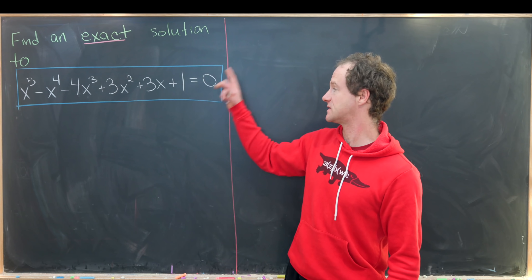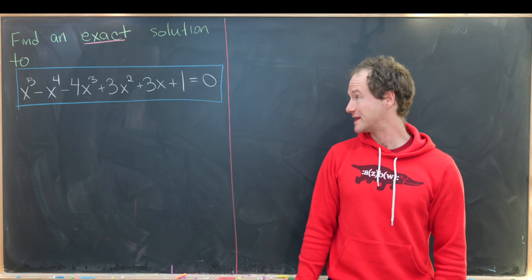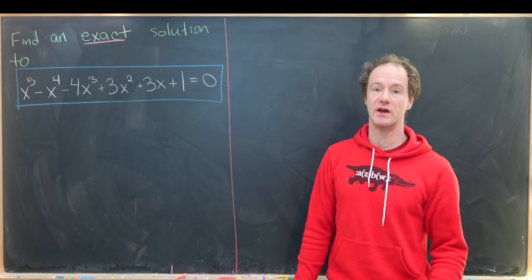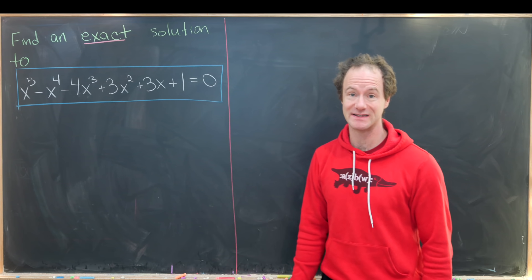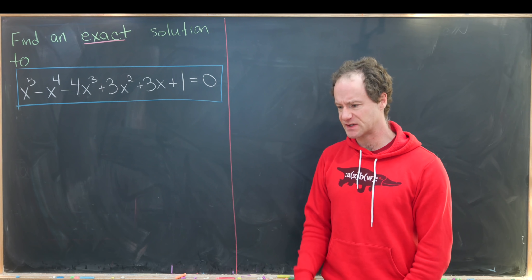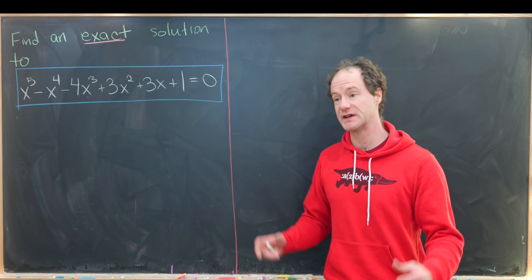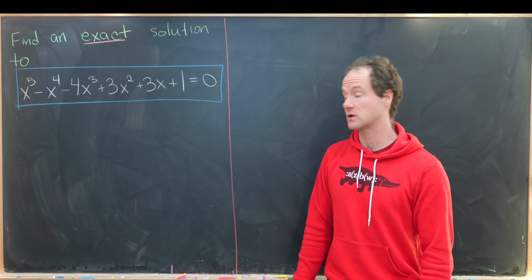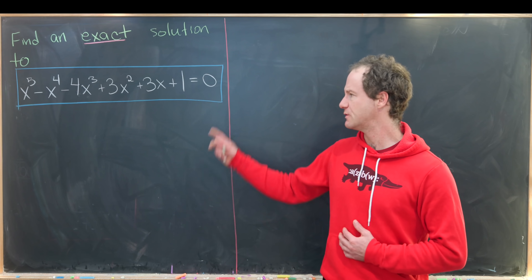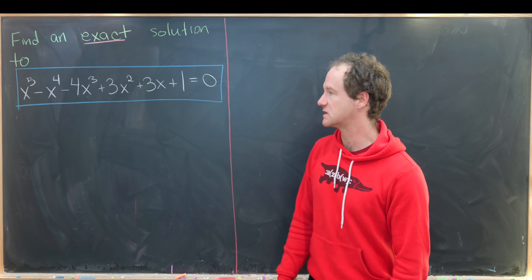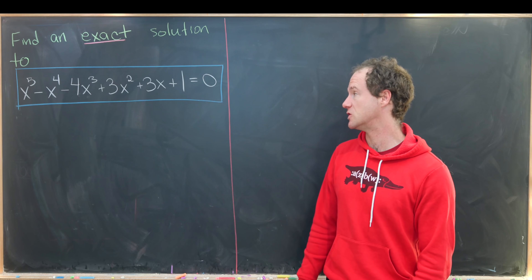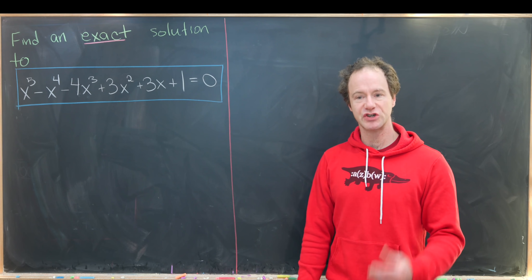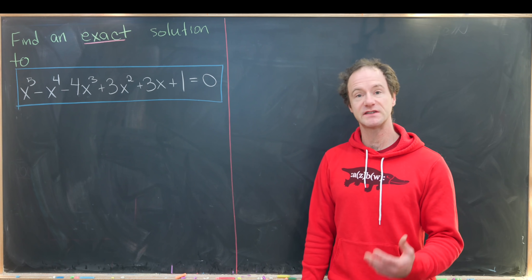We're going to find an exact solution to a quintic polynomial equation. Since we're trying to find an exact solution, there must be some sort of trick that makes this possible — because generally something like this is not a reasonable question to ask. The equation is x to the fifth minus x to the fourth minus 4x cubed plus 3x squared plus 3x plus 1.